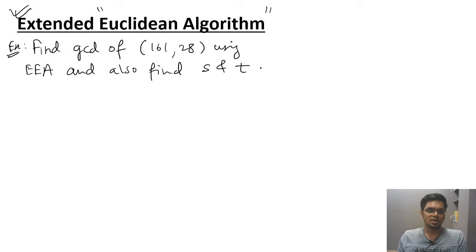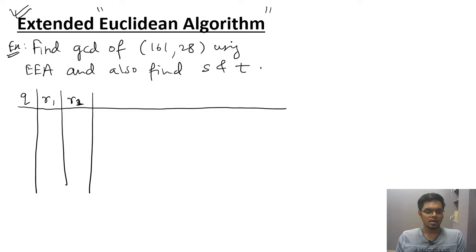Step one is creating the table and the table has a lot of columns. So make a note while writing the notes. Column one is Q, column two is R1, column three is R2. Then we have R. So this is exactly same as the Euclidean algorithm. Nothing is changed.